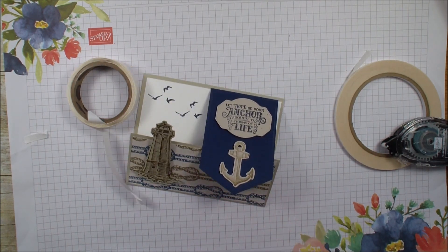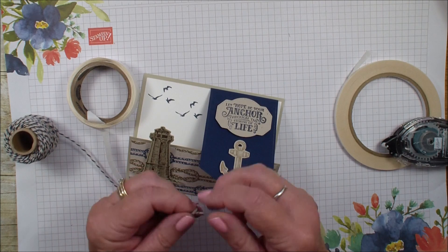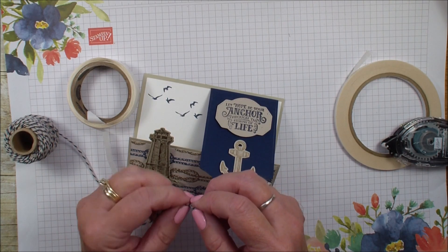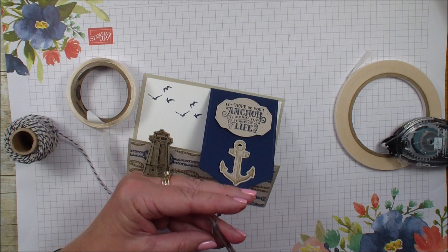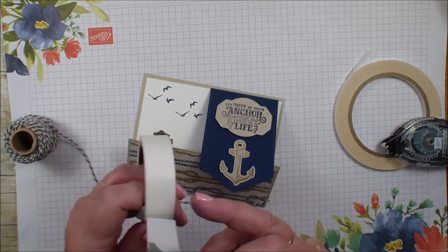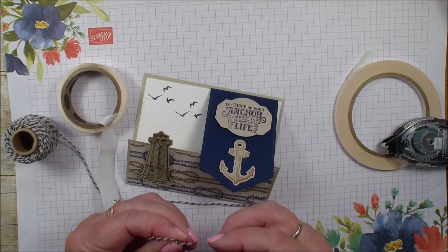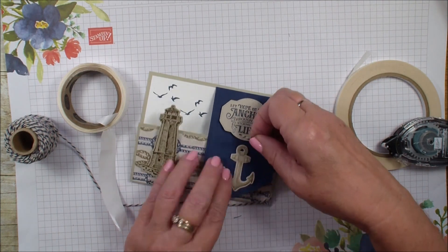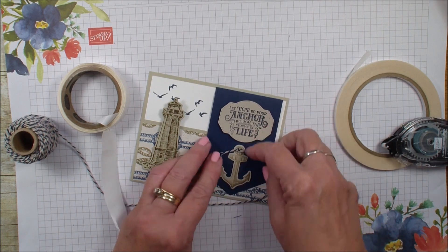Then I'm going to grab my Baker's Twine. This is Night of Navy and Sierra Sand. It is part of the Sail Away suite. You want to check out those suites. You know that we can buy the bundle which is just the die and the stamp set but we can also buy the whole suite, so all the accessories that go with the suite, the matching twine in this case. So I just did a slip knot and added that glue dot to that twine.